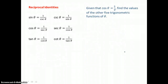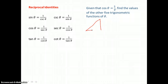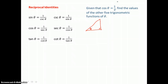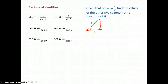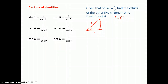In this problem, we're given that the cosine of theta equals 5/8, and we want to find the values of the other five trigonometric functions of theta. We'll draw a right triangle and label one of the acute angles theta. Applying the definition of cosine — adjacent over hypotenuse — we label the side adjacent to theta as 5 and the hypotenuse as 8. To find all trig functions we need the missing leg, so we'll use the Pythagorean theorem.